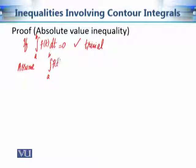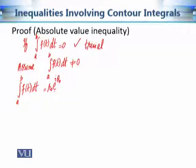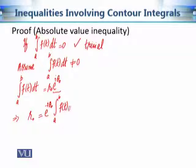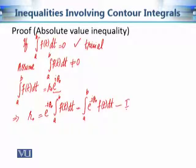Assume that the integral from a to b of f(t) dt is nonzero. If it is nonzero then it equals some complex number which we write in polar form as r₀·e^(iθ₀). This implies that r₀ equals e^(-iθ₀) times the integral from a to b of f(t) dt. Since e^(iθ₀) is independent of t, we can take it inside the integral. This is our first equation that we will use in the proof.